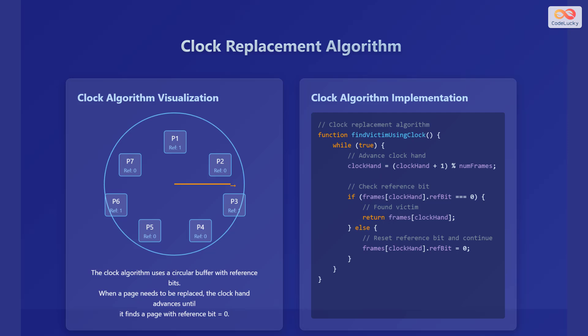The clock algorithm finds a victim by advancing the clock hand. If the reference bit is 0, it returns the current frame. Otherwise, it resets the reference bit to 0, and it continues this process until a suitable victim is found.